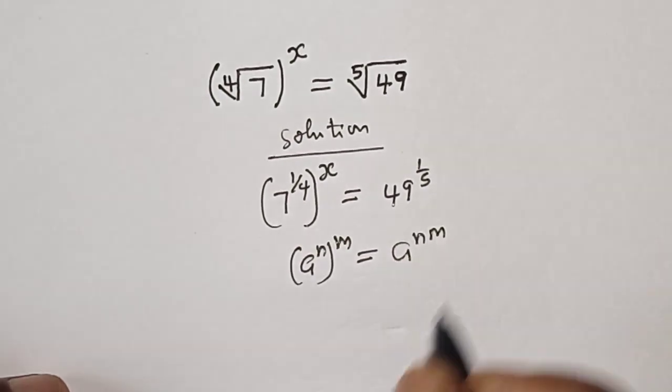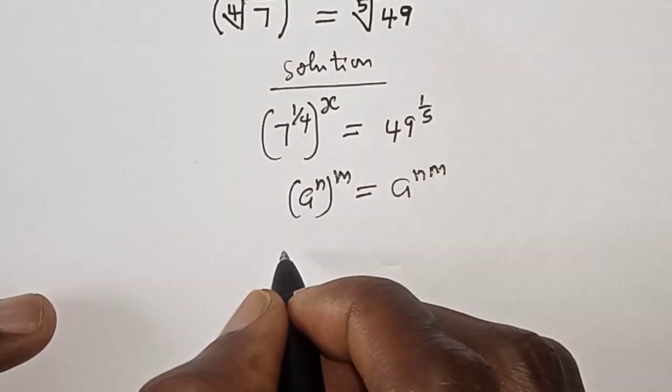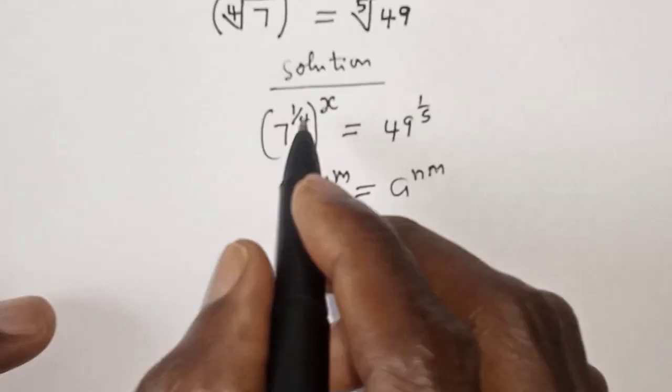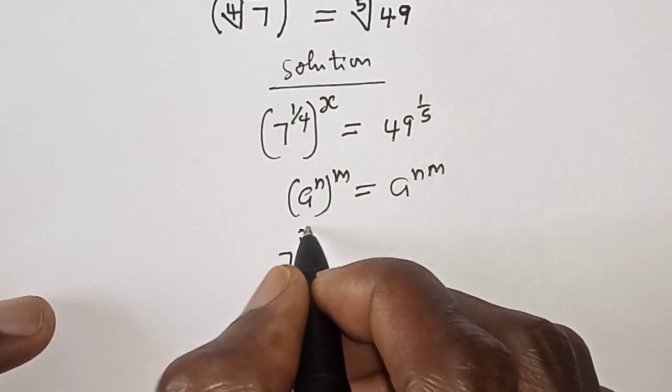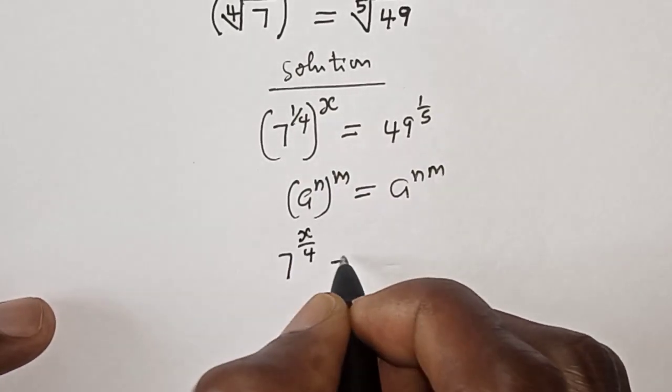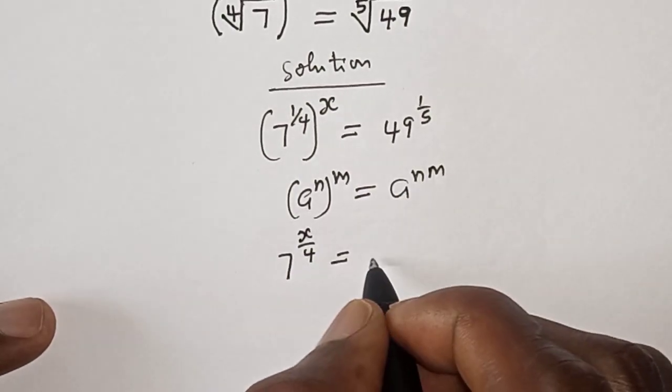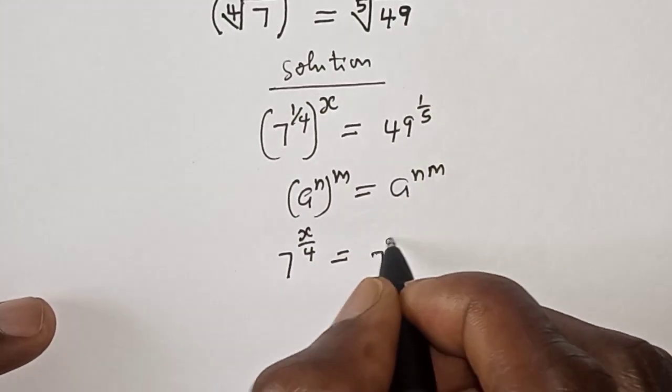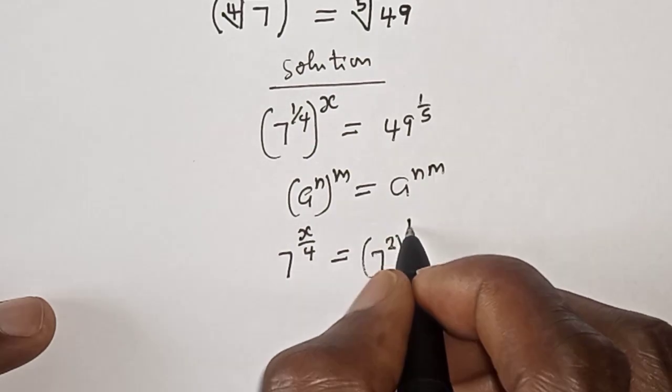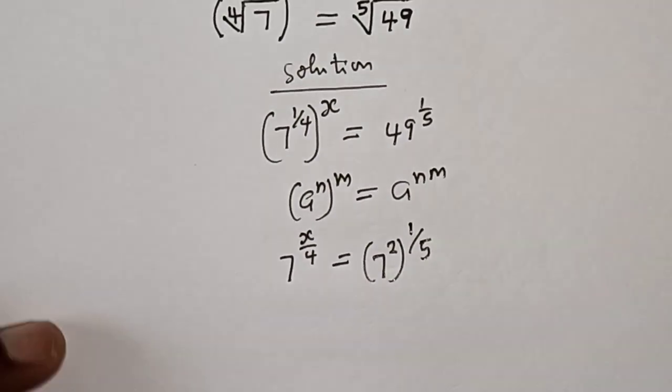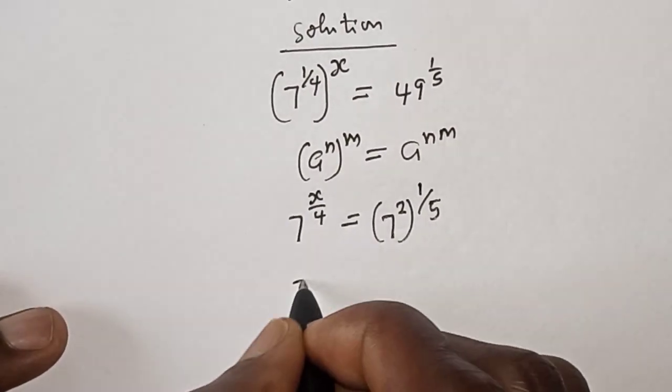And this is 7 raised to power 1 times x, which is x over 4, is equal to 49 can be written as 7 squared to the power of 1 over 5.